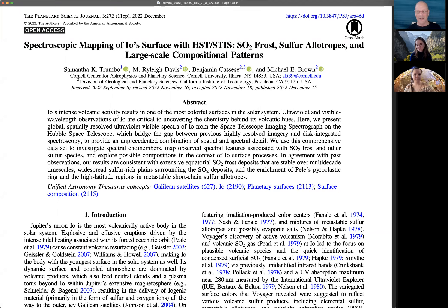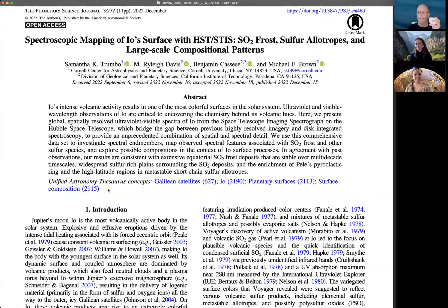That little tightly torqued beast. And that is going to take us to this very awesome Planetary Science Journal article. It's open access, people, so you can go get a copy for free. Spectroscopic mapping of Io's surface with HST-STIS: SO2 frost, sulfur allotropes, and large-scale compositional patterns.